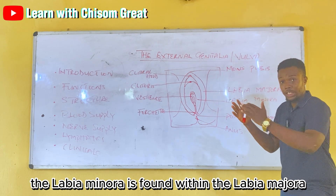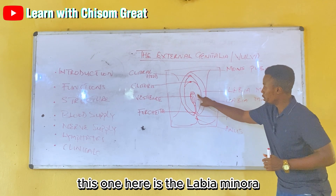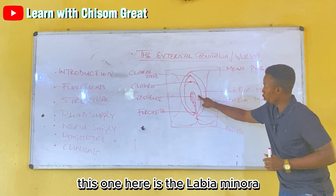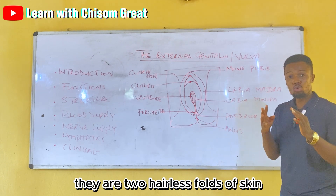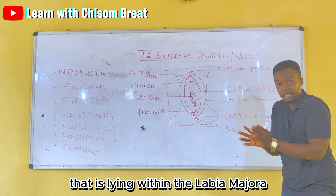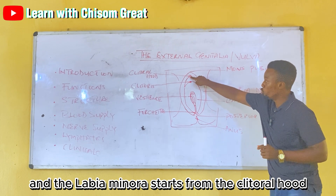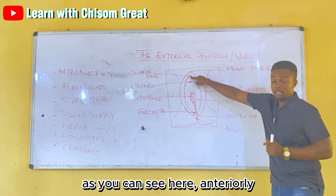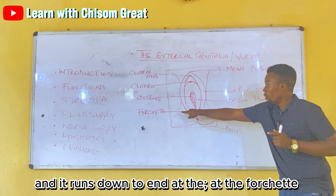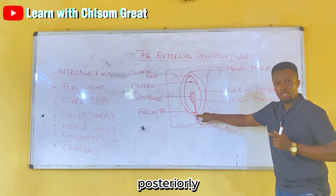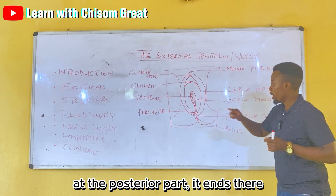The third structure is the labia minora, found within the labia majora. The labia minora consists of two hairless folds of skin lying within the labia majora. Anteriorly, the labia minora starts from the clitoral hood and runs down posteriorly to end at the fourchette — a fold of skin at the posterior part.